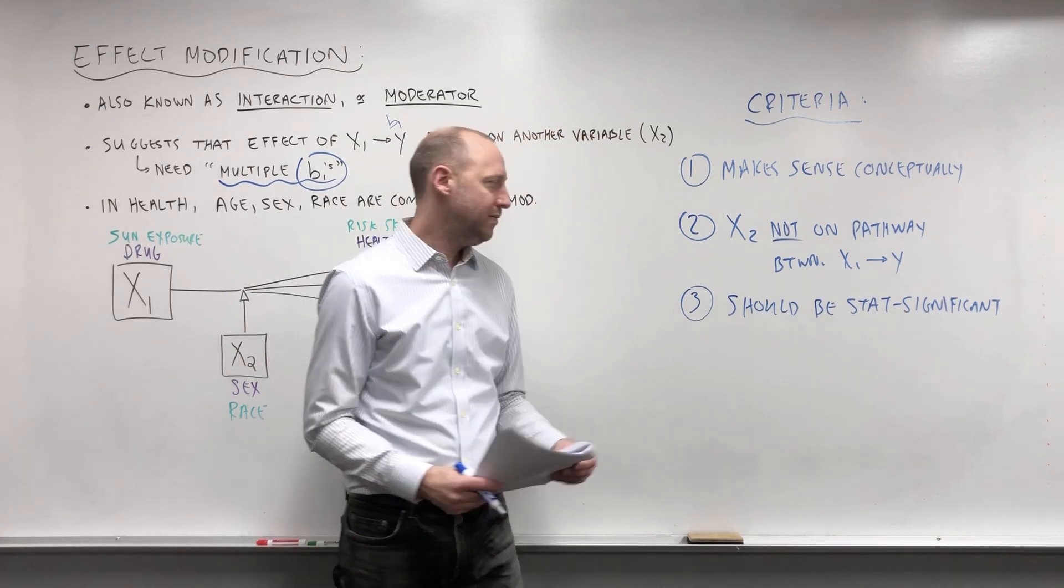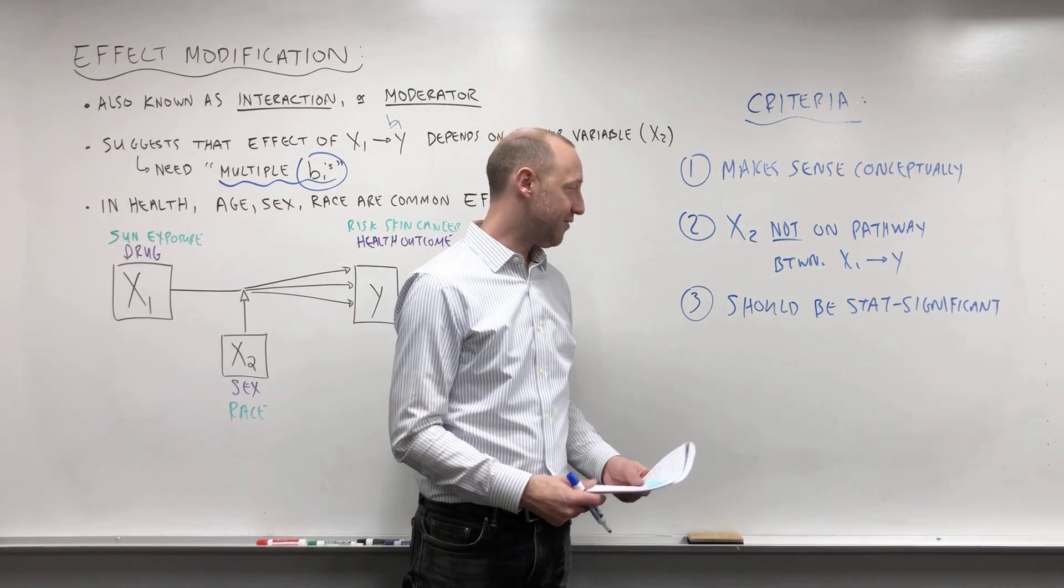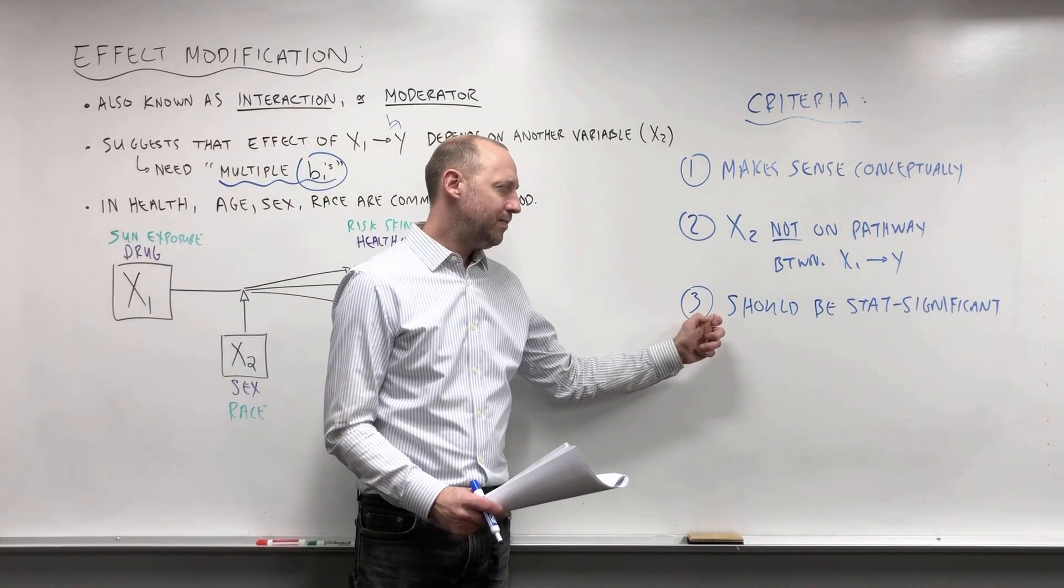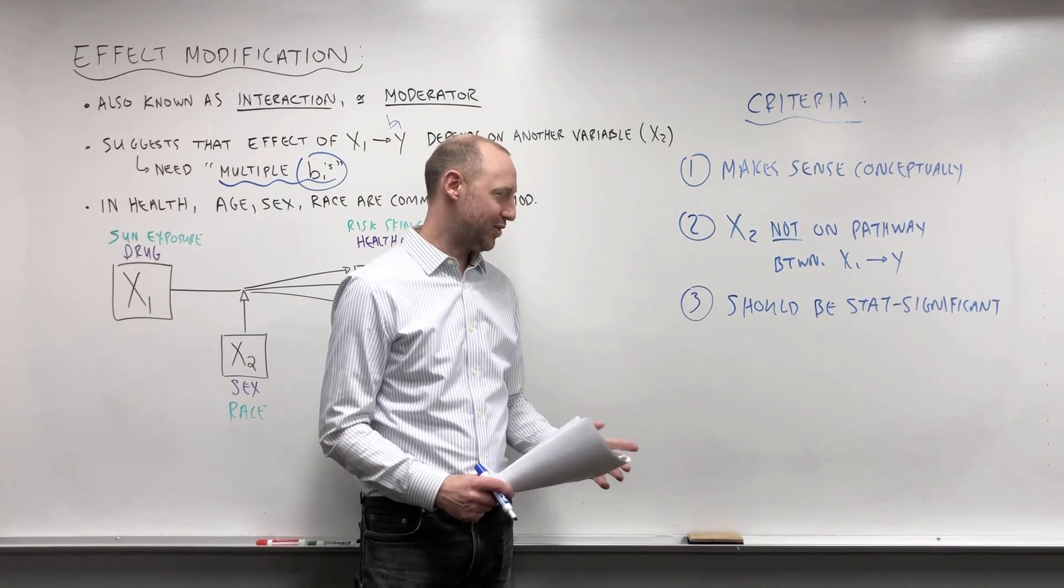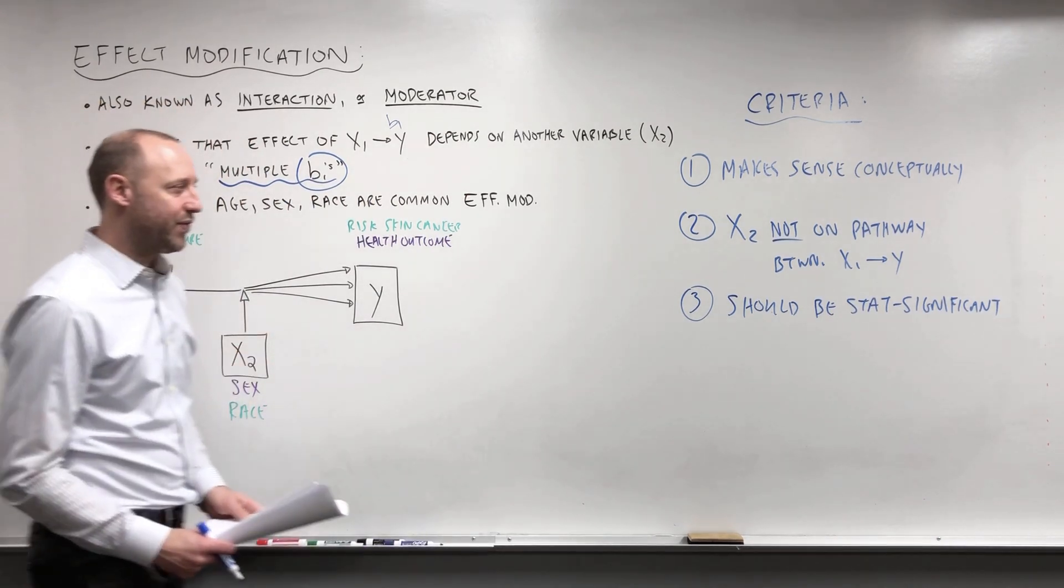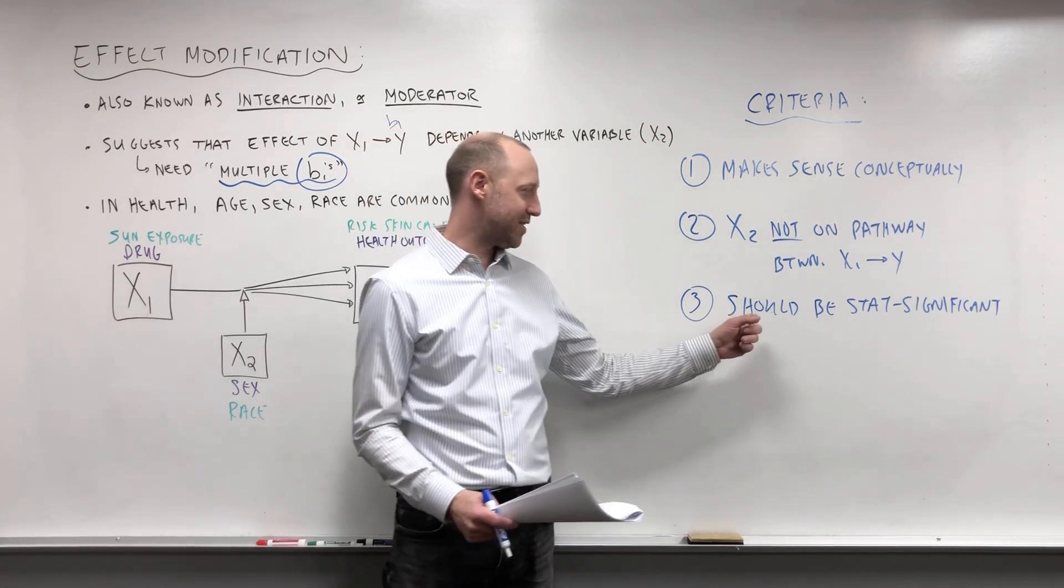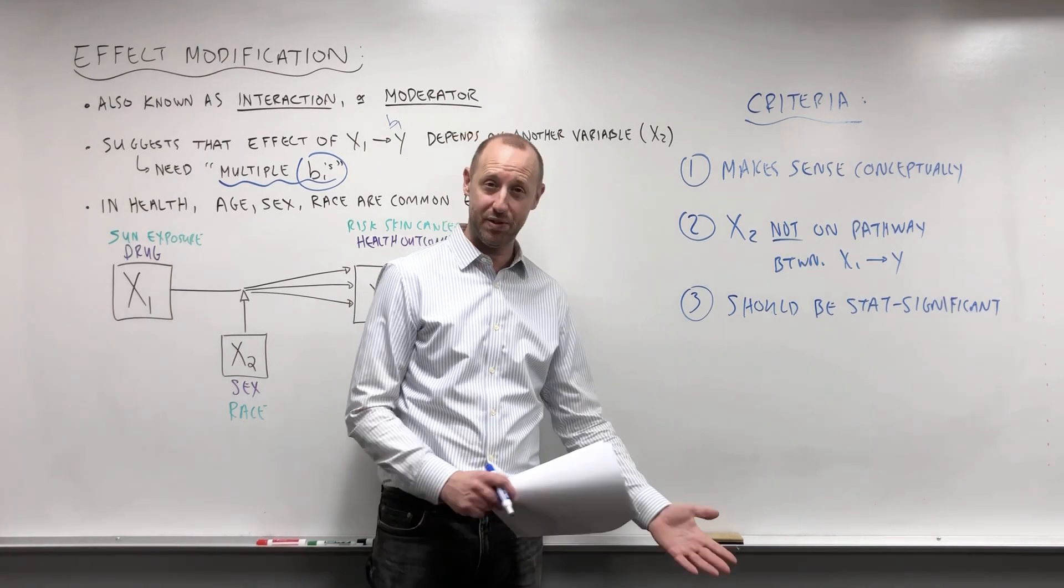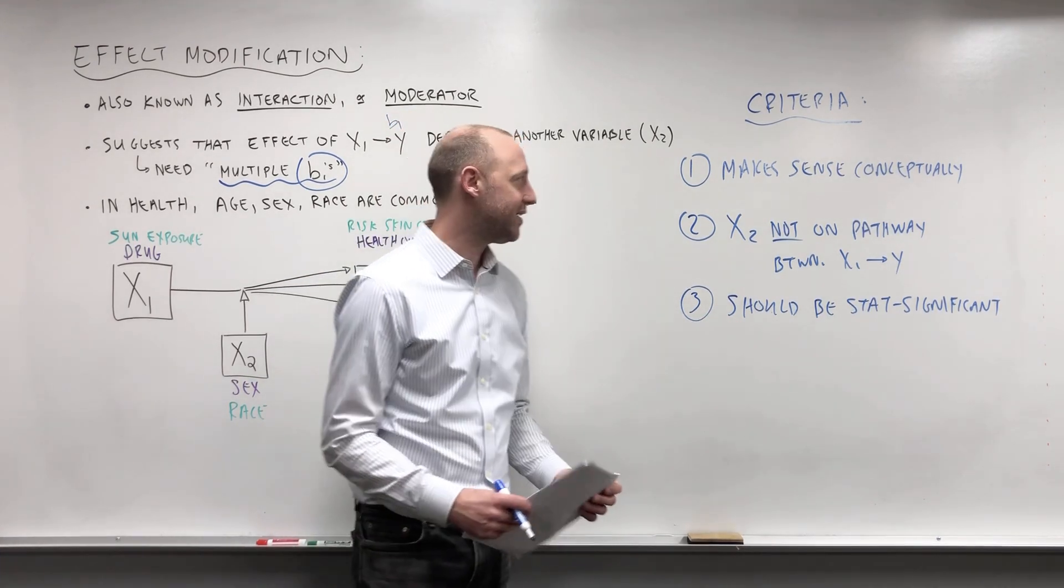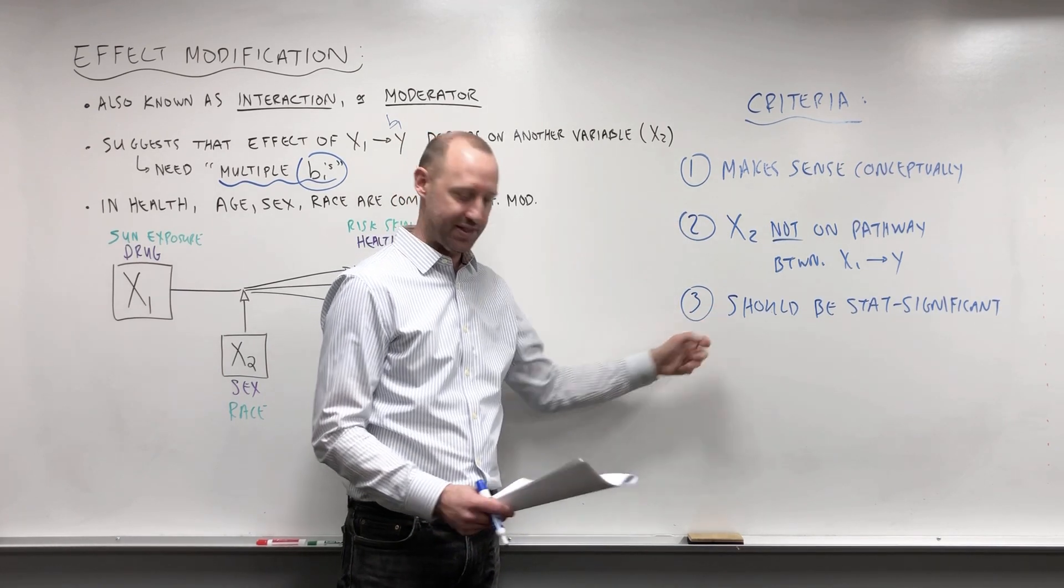And then another criteria is that numerically the effect modifier should be statistically significant. And a few things I want to say there. Later in this course we're going to see the statistical test for testing significance of effect modification. And I also want to put in the reminder, we don't want to get stuck on statistical significance too much, right? But what I want to say is, more than just making sense conceptually, there should be some statistical evidence that there is effect modification. And again, I don't want to get stuck on the p-value for the effect modification is 6% versus 4%, and for that to entirely change our conclusion. But really what this is meant to flag is, more than just thinking there's effect modification, having some statistical evidence that there is.